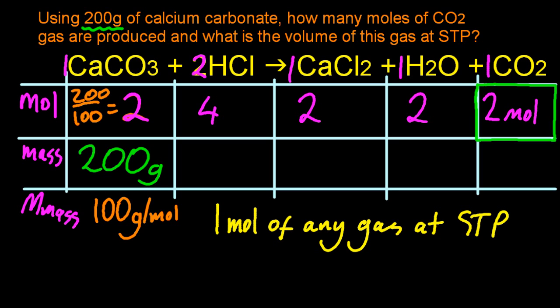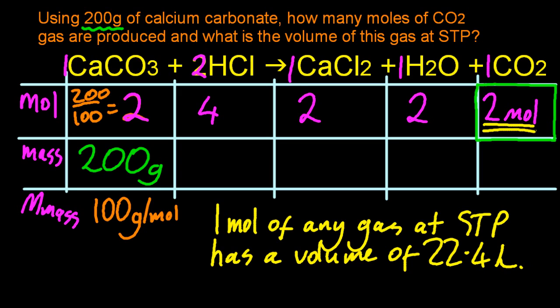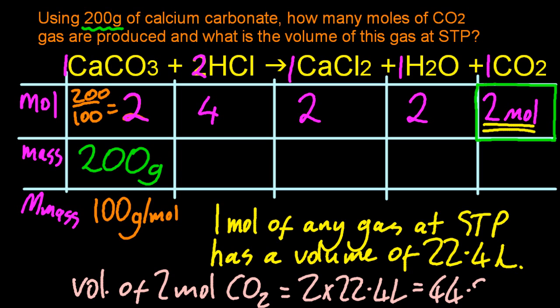Now 1 mole of any gas at STP has a volume of 22.4 litres. Well, we've got 2 moles of gas. So the volume of 2 moles of carbon dioxide, well that's double and that's 44.8 litres. Oh, and with 1 sig fig, I suppose that's 40 litres. Yuck.